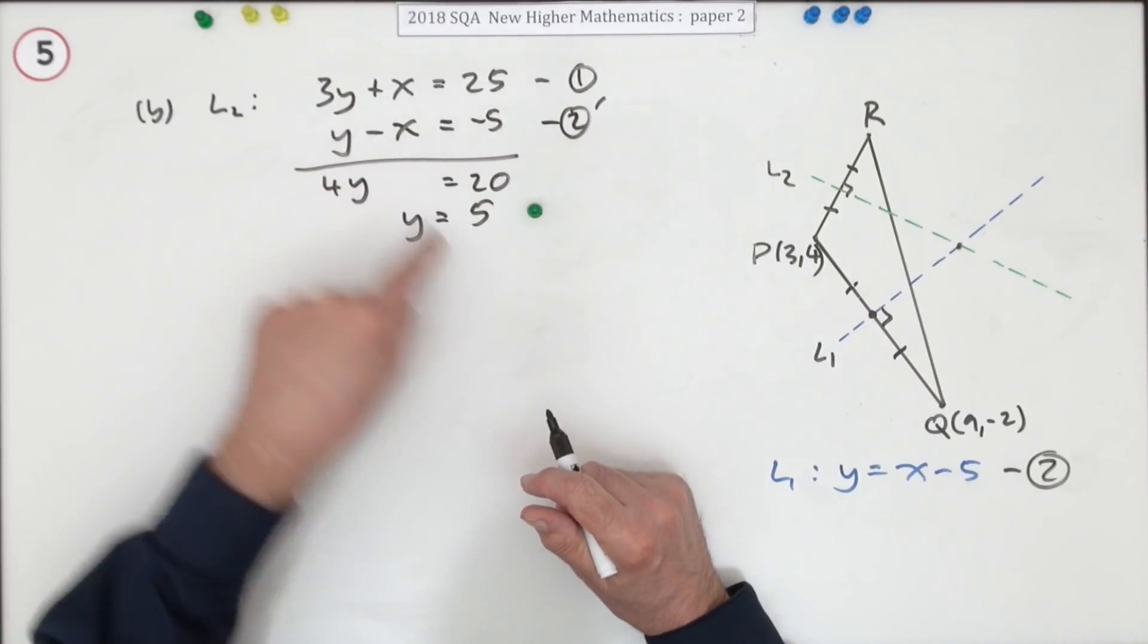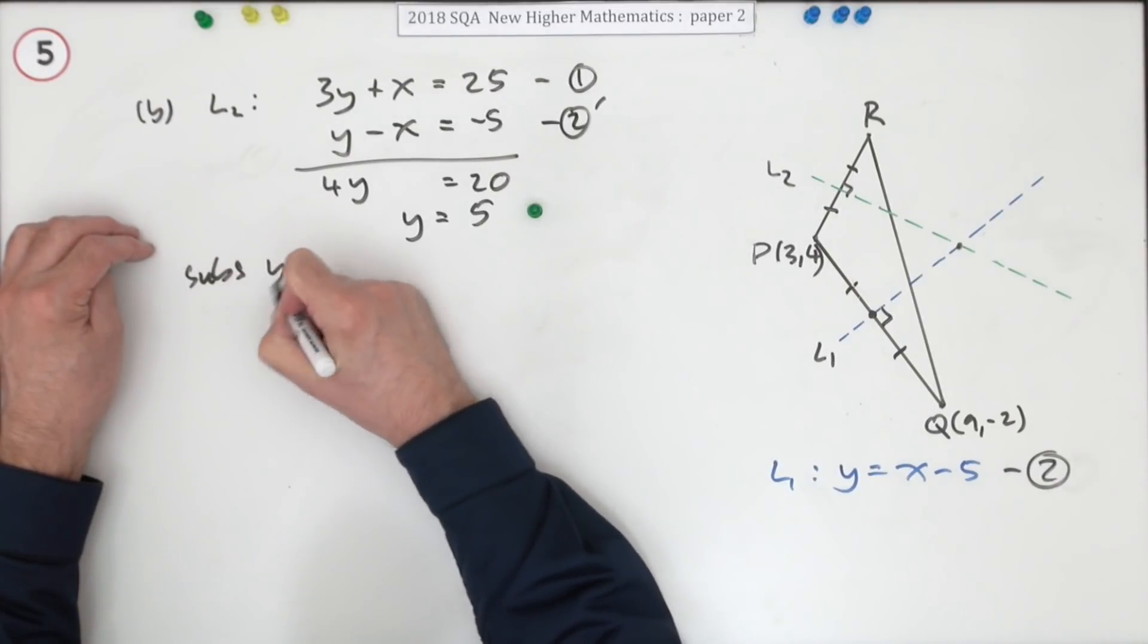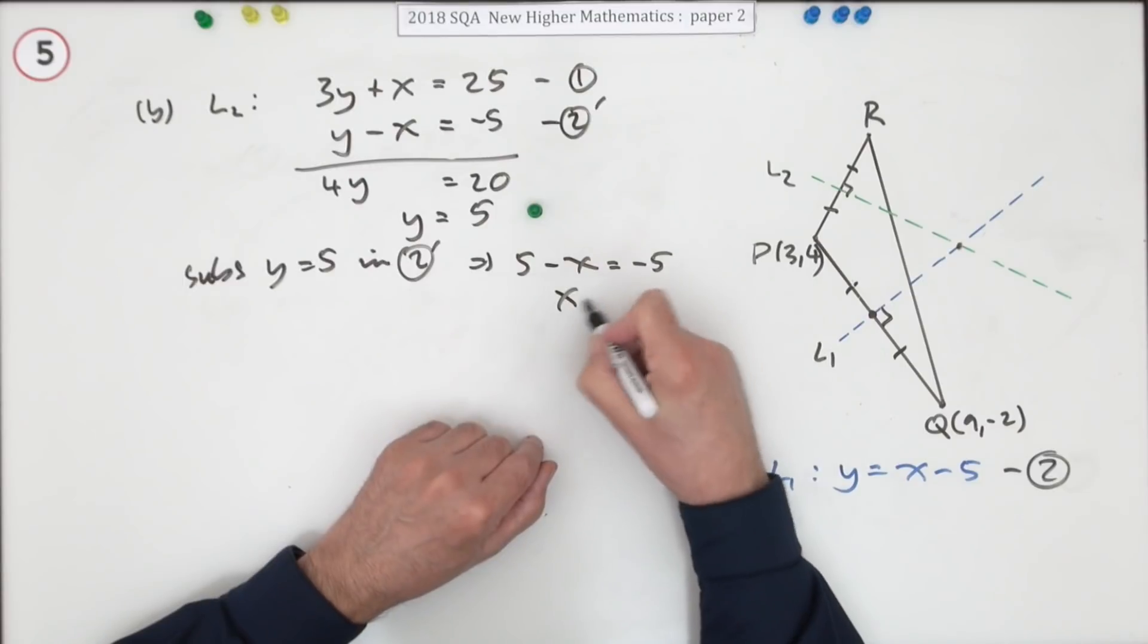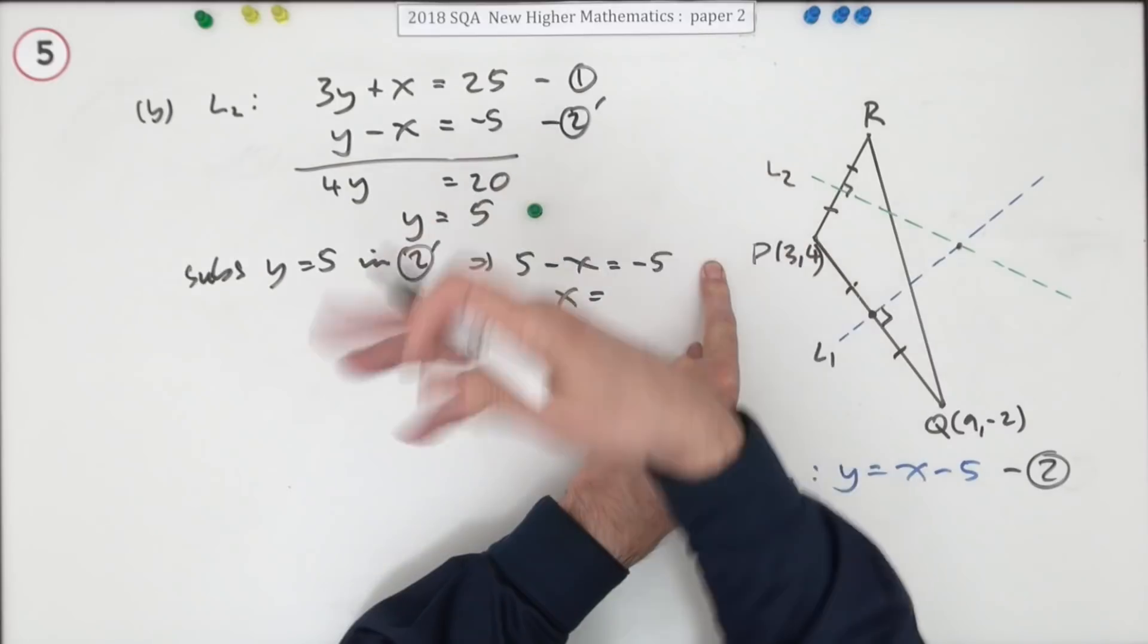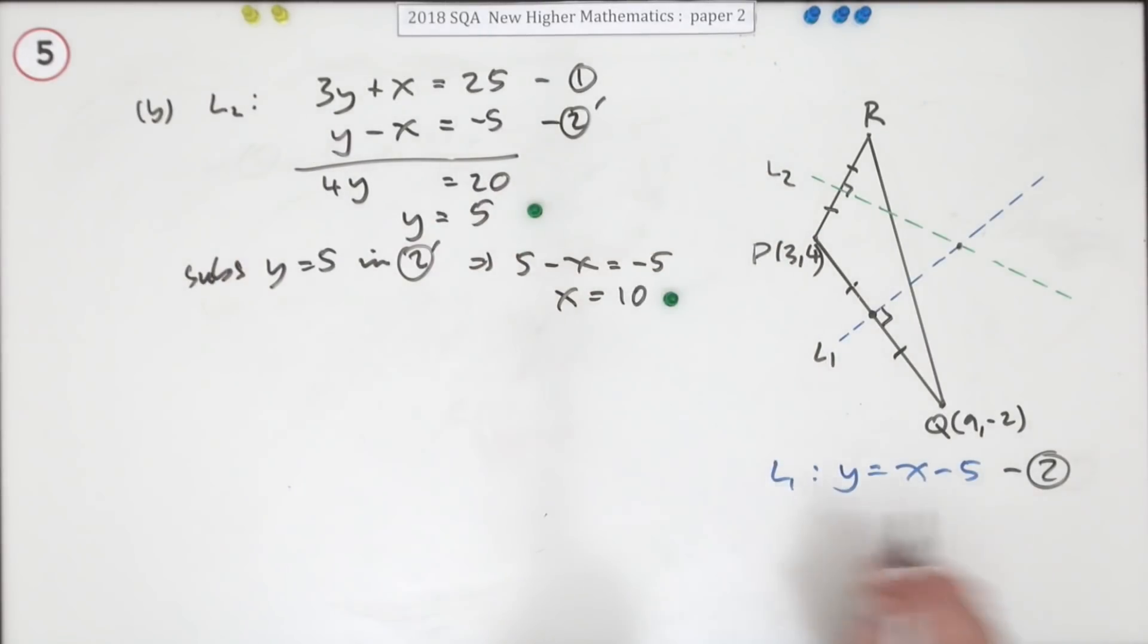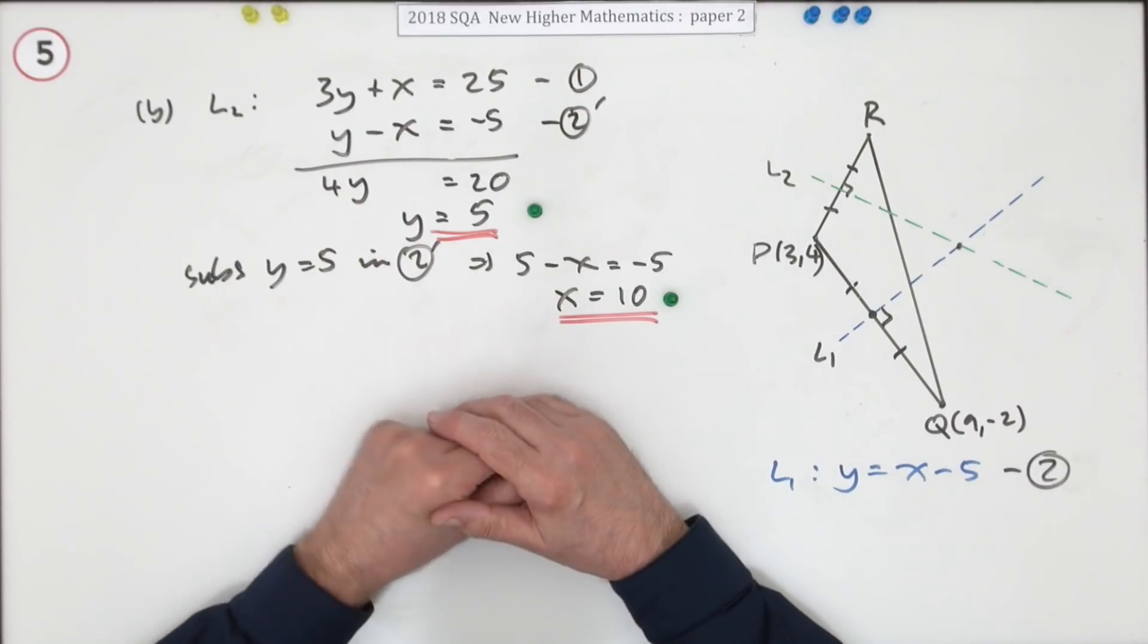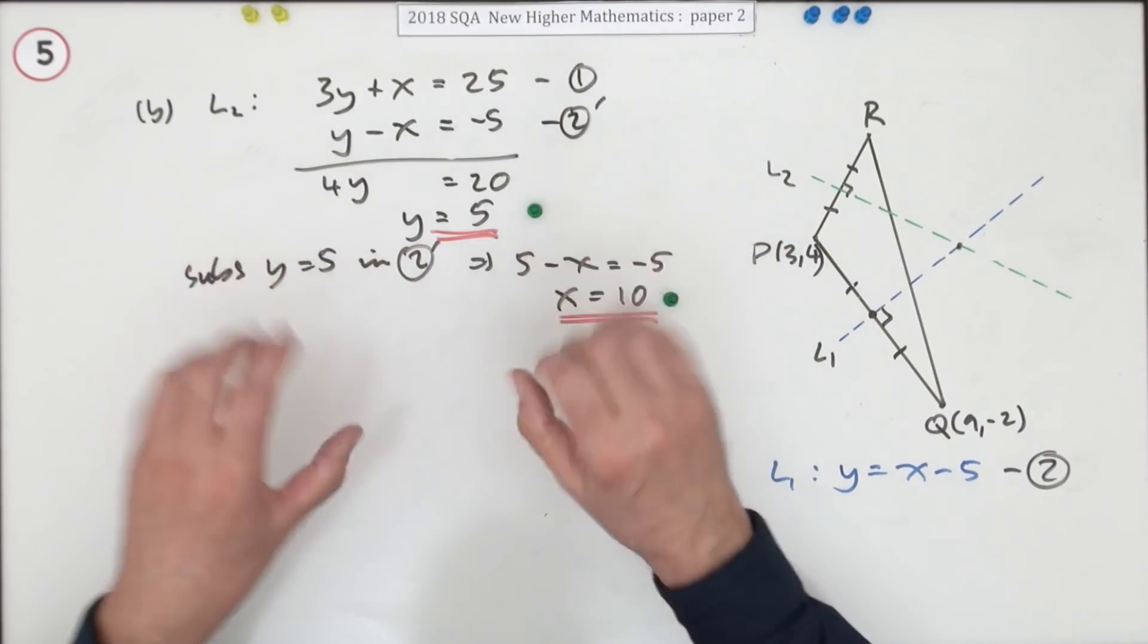So immediately you've got y equals 5. Then popping it either into this one or into the original one, if I stick with this one, if I say substitute y equals 5 in 2, that means I've got 5 take away x is negative 5. So just taking the x to this side so it's positive, and throwing that 5 away because I just want x on its own, comes across as plus 5. X equals 10. But that does look a bit neater than the substitution method. I still always use substitution anyway. But that does look a bit neater simply because there's less ink on the page.